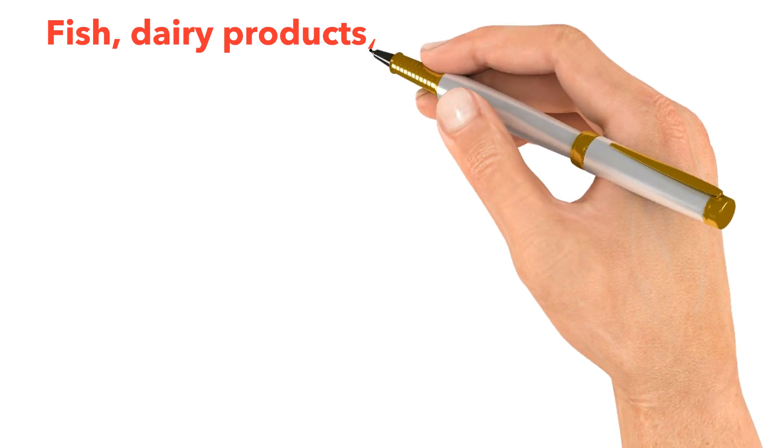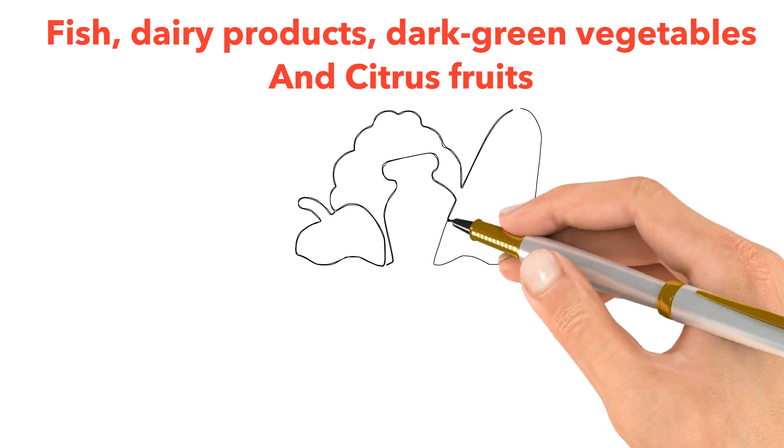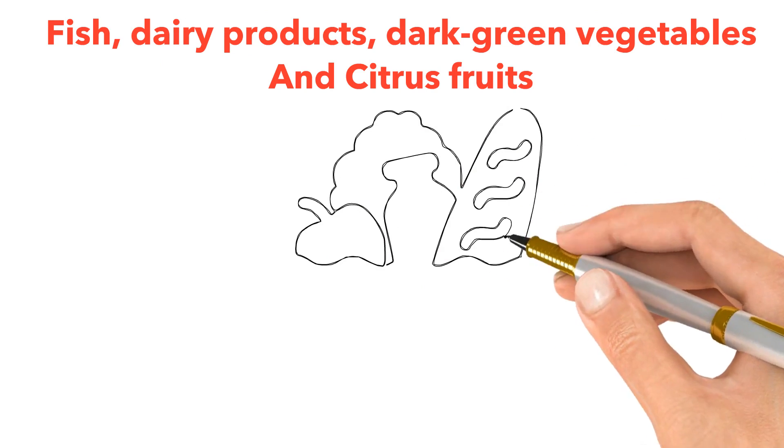Fish, dairy products, dark green vegetables, and citrus fruits are some of the rich sources of micronutrients. However, all foods have traces of micronutrients.